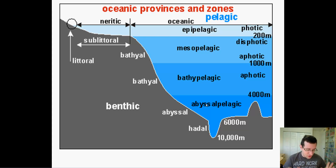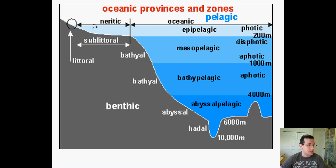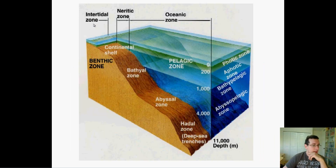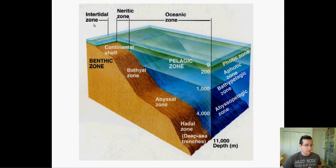The area that sees the greatest change in abiotic factors throughout day and night would be the littoral zone or intertidal zone, because it's sometimes above and sometimes below water. Now let's look at some pictures of these zones. Here you see the basic breakdown of those areas: the intertidal zone, the continental shelf where the sublittoral zone or neritic zone sits, and then the bathyal zone, abyssal zone, and hadal zone.